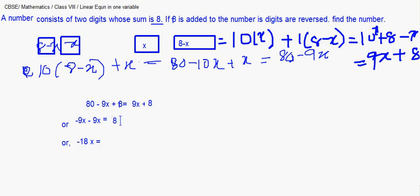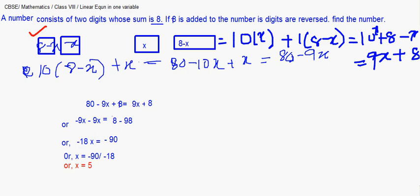So x equals minus 90 divided by minus 18, which gives x equals 5. Since x equals 5, and we placed x at the units position, the units digit is 5. The tens digit is 8 minus 5, which is 3. Therefore the original number is 35.